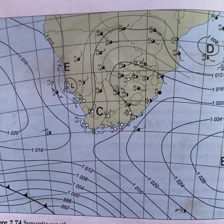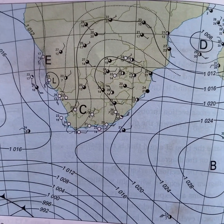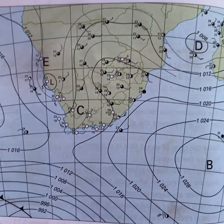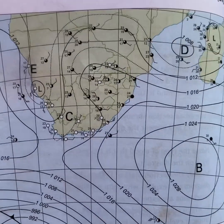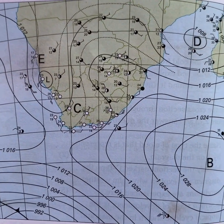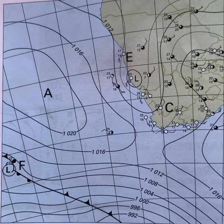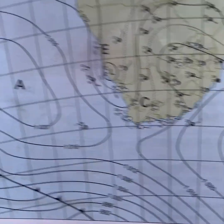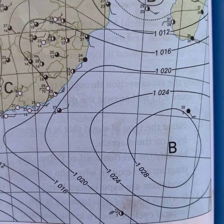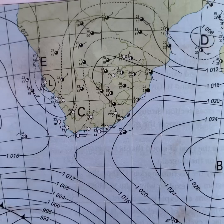The first question asks us to name the high pressure systems at A and B. They're giving you a clue when they say high pressure systems — another term is anti-cyclone. There are three anti-cyclones that affect South Africa. A is on the western side, so it should be the South Atlantic High Pressure, and B is on the eastern side, so it should be the South Indian High Pressure.